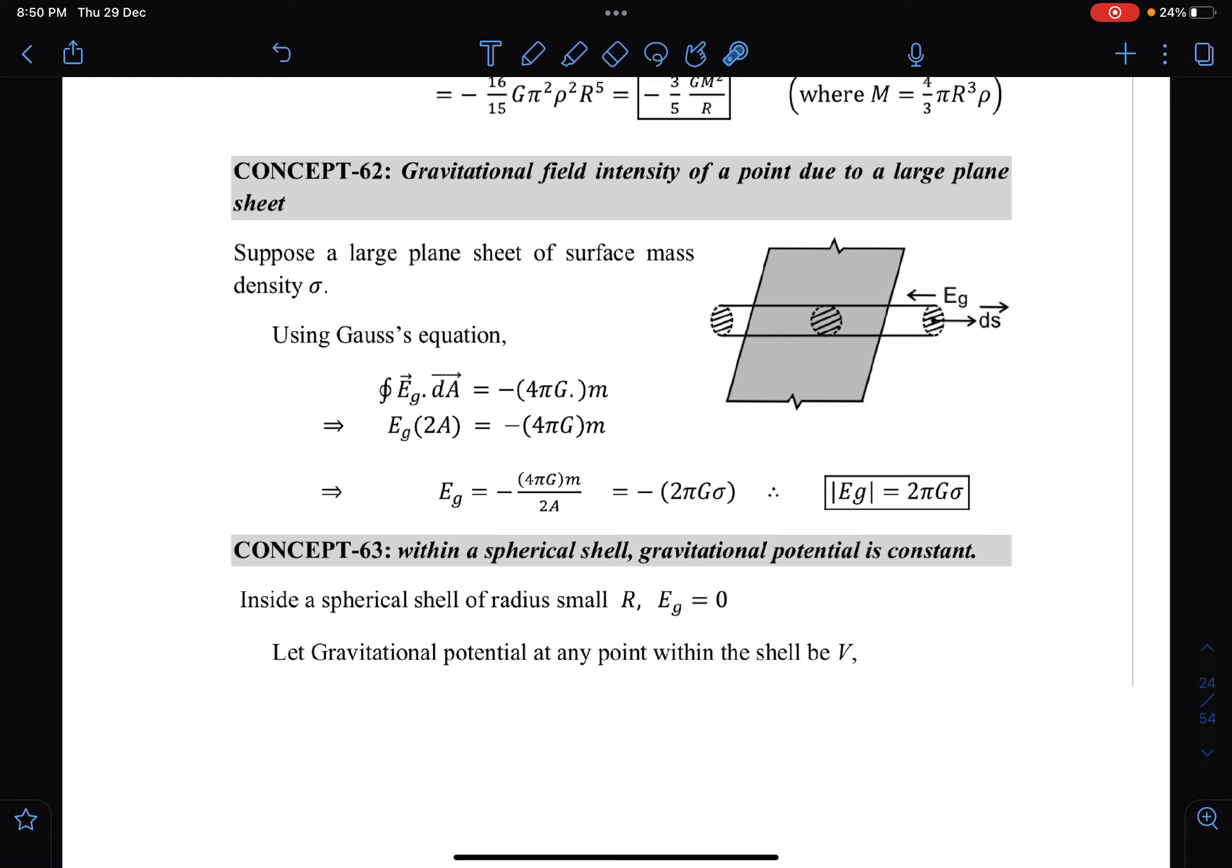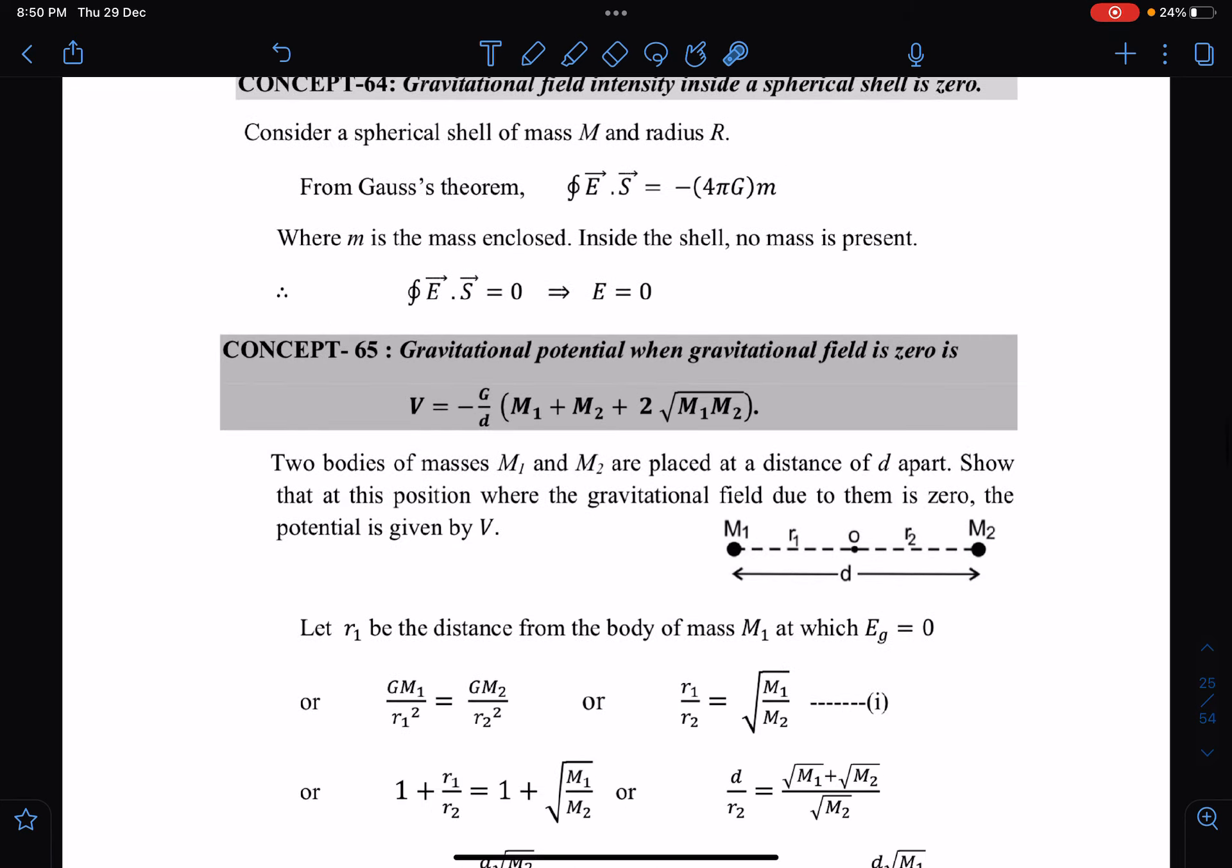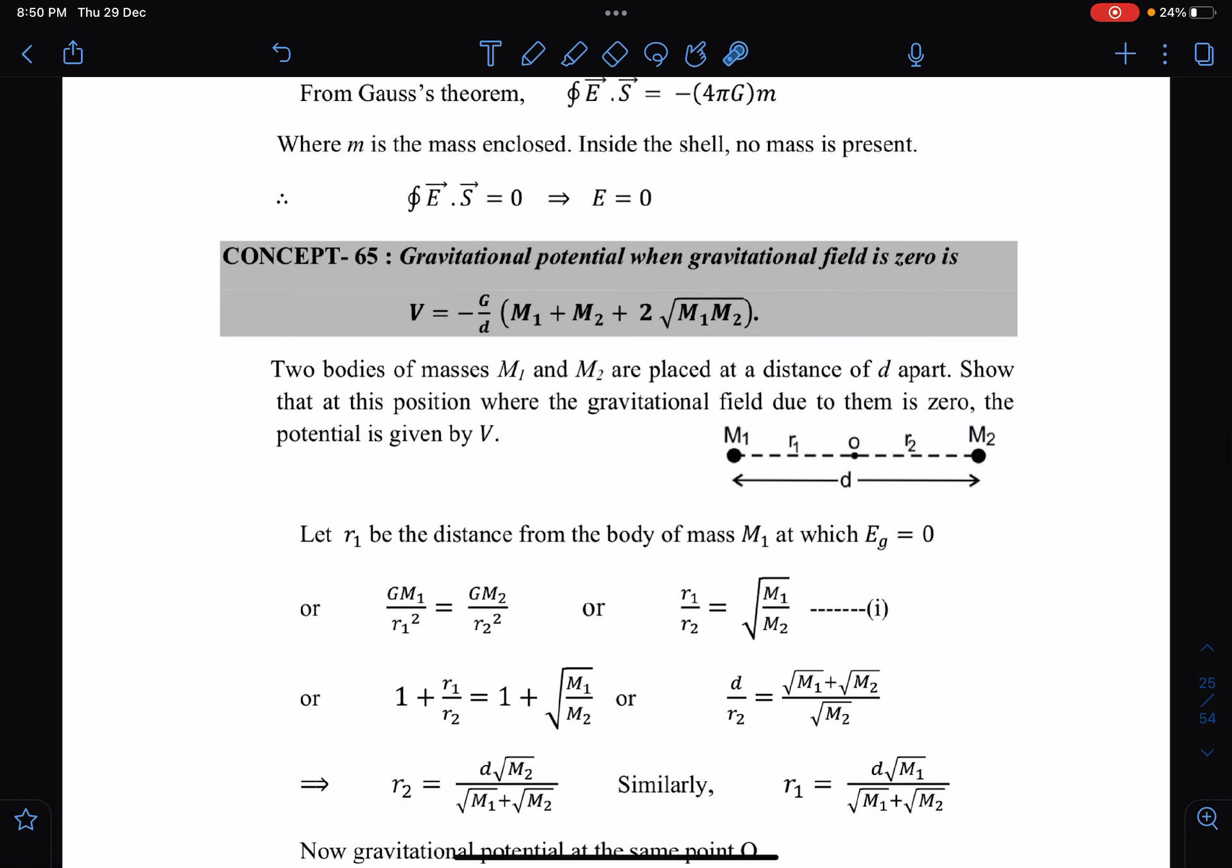Self energy, Gauss theorem results and calculation of gravitational field. When gravitational field is zero, if two point masses are there, this is the general result of potential: minus G by D, root M1 plus root M2 whole square. Very easy to remember also.